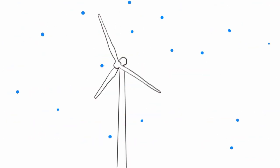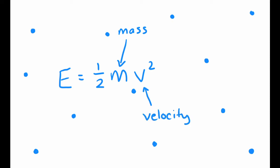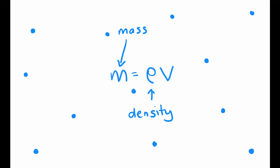Air is made up of a lot of moving particles which have mass m and velocity v, and therefore kinetic energy e. Faster moving air has more energy than slower moving air, and likewise air with more mass has more energy. The mass of air is measured by its density rho times the volume. The main factors that affect air density are temperature and altitude, so turbines in cold locations at low altitudes can generate more power than in warm locations at high altitudes if the wind speeds are the same.